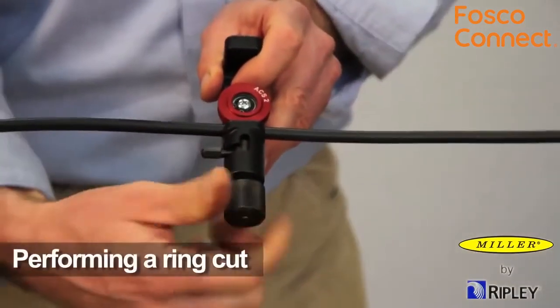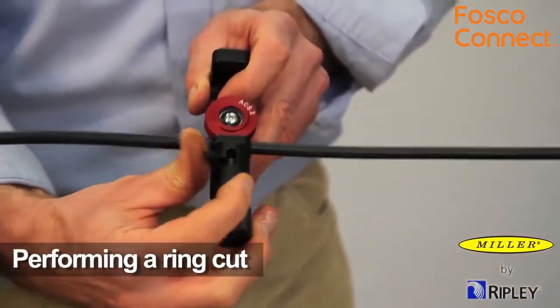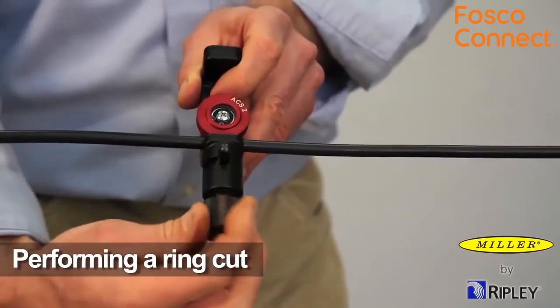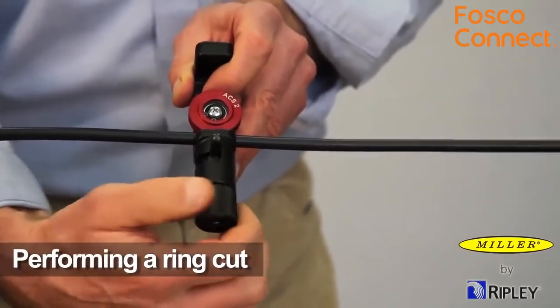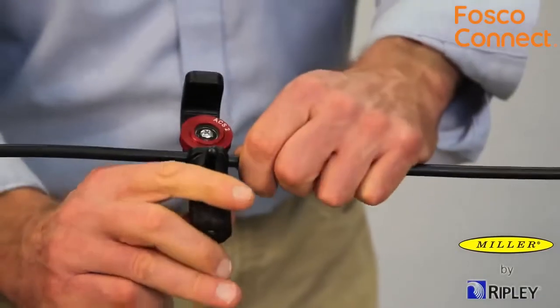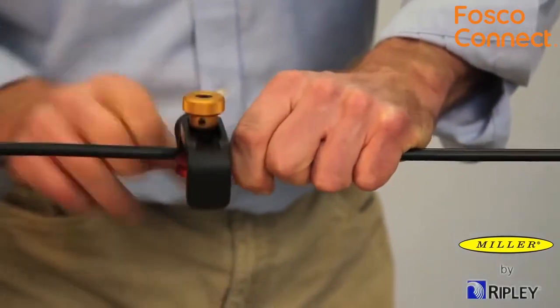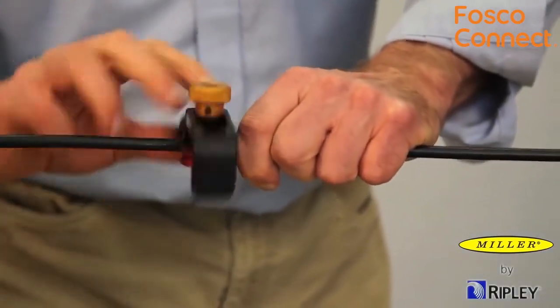Make a ring cut by first retracting the blade assembly. Then, index the blade assembly to the ring cut position. Reposition the blade assembly to the cutting depth and turn the tool two or three revolutions for a ring cut.